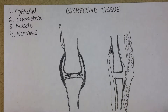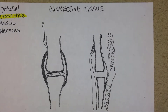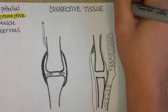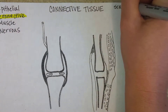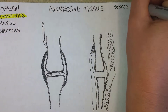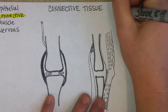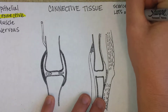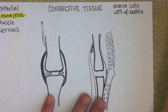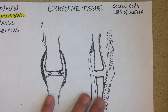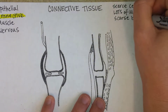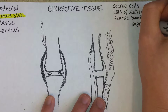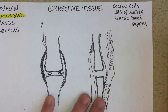Connective tissue is well known for the fact that it has scarce cells — meaning not very many — lots of matrix, which I'll explain in a second. Suffice it to say, it's not cells. And usually a scarce blood supply compared to other tissues, like epithelial for example.